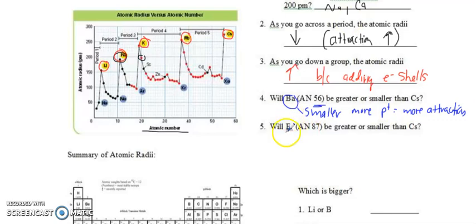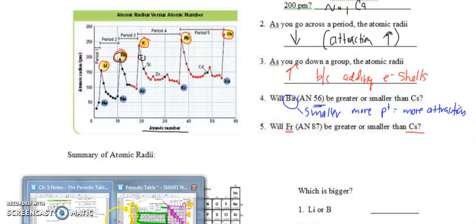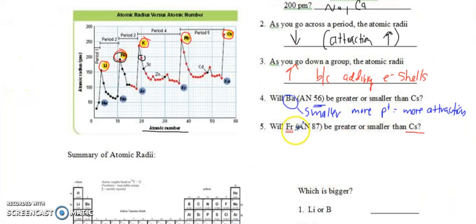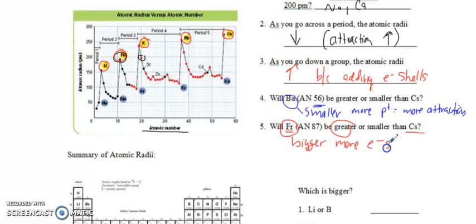Next question: will francium, number 87, be greater or smaller than cesium? Let's check the periodic table. Cesium and francium are in the same column. Francium is lower. Cesium has six electron shells and francium has seven. So which one has to be bigger? It's going to be francium. Francium is going to be greater — it's going to be bigger because it has more electron shells or more energy levels.